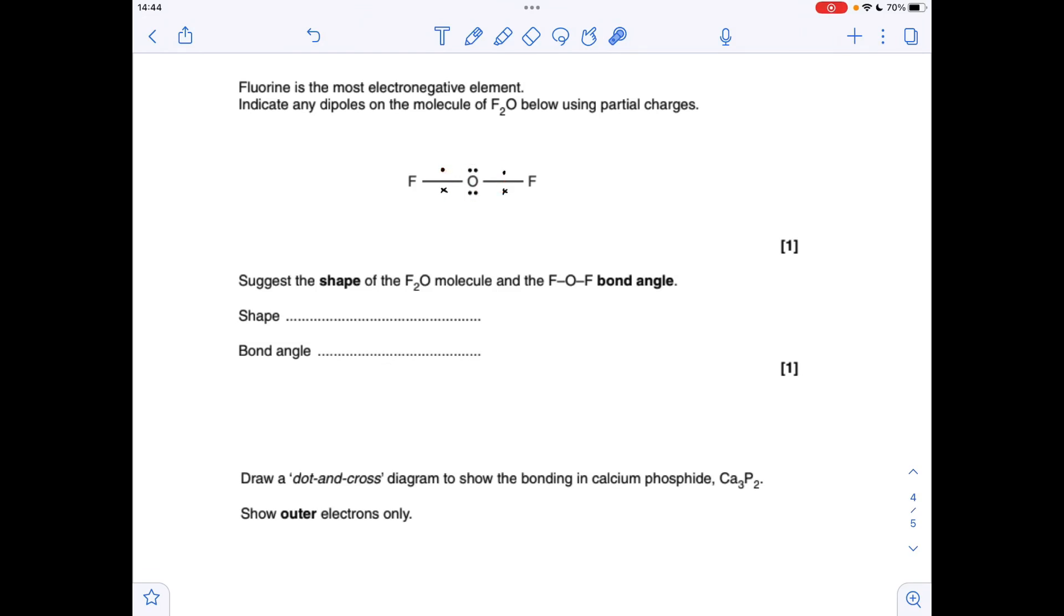So the shape, they've drawn it looking linear, it's not linear. It's actually based on a tetrahedral structure, but if we only count the bonds, we've got a non-linear shape.